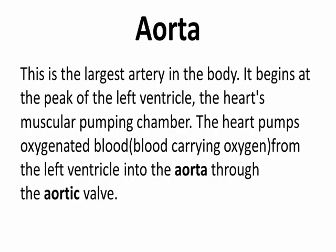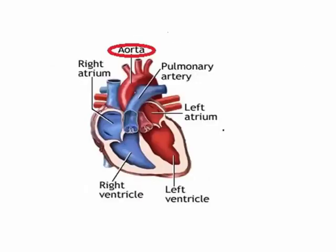Aorta. This is the largest artery in the body. It begins at the peak of the left ventricle, the heart's muscular pumping chamber. The heart pumps oxygenated blood — blood carrying oxygen — from the left ventricle into the aorta through the aortic valve.